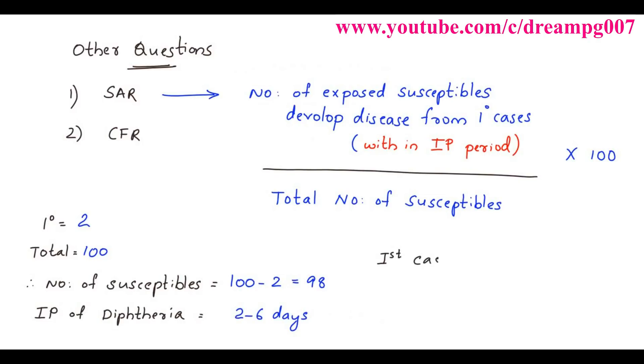First case occurred on December 1, therefore cases occurred up to December 7 can be considered under secondary attack rate. So secondary attack rate is 28 divided by 98 times 100 equals 28.57.